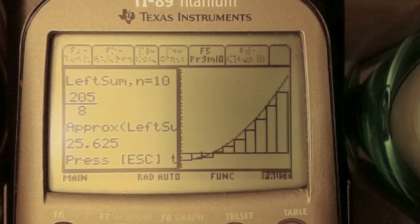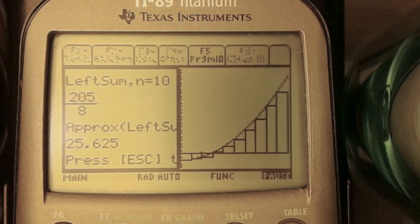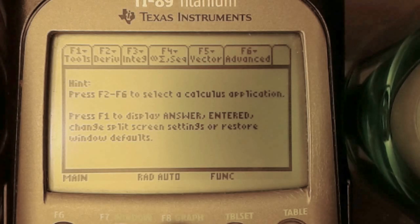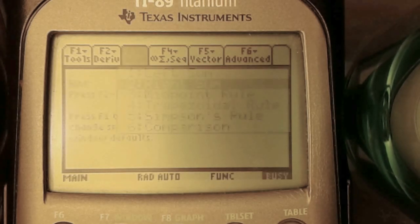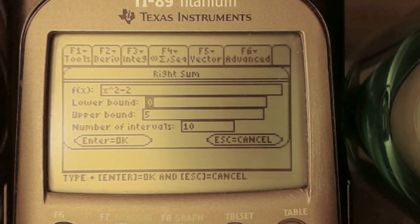Now let's try a right Riemann sum. Press enter, enter, F3. Now using a right Riemann sum, we're going to use the same function, the same bounds 0 to 5, and the same number of partitions, which is 10.